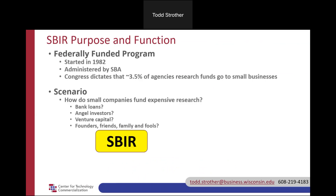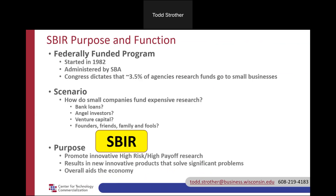Enter the SBIR program — Small Business Innovation Research. It's mostly grants, but there are some contracts. As the name suggests, it funds technically risky, innovative research available only to small businesses. It promotes high-risk, high-payoff research that investors will shy away from. The goal is that those funds will result in innovative products that solve significant problems, and then the company can make sales, pay taxes, hire people, and help the economy overall.